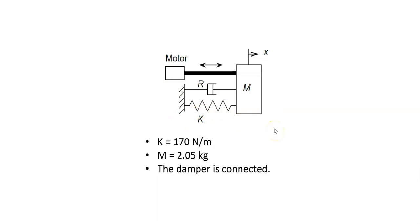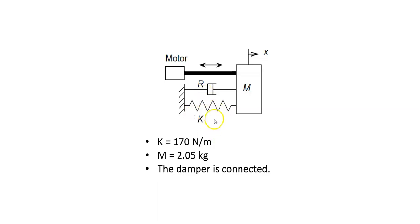The oscillatory force is applied from the motor to the carriage, which then starts oscillating. The damper damps this oscillation, and from the data you can notice that it is damped after three oscillations.